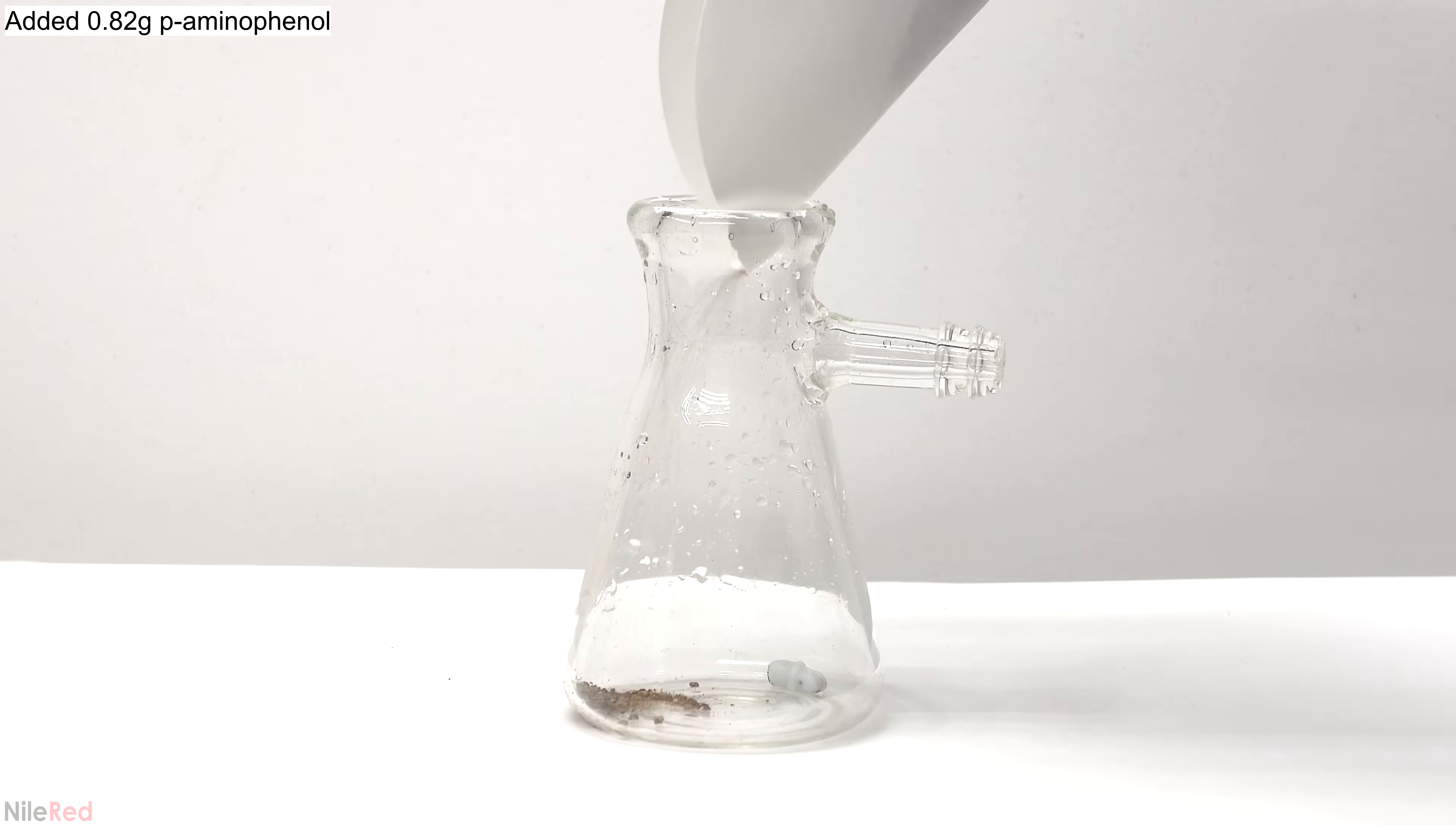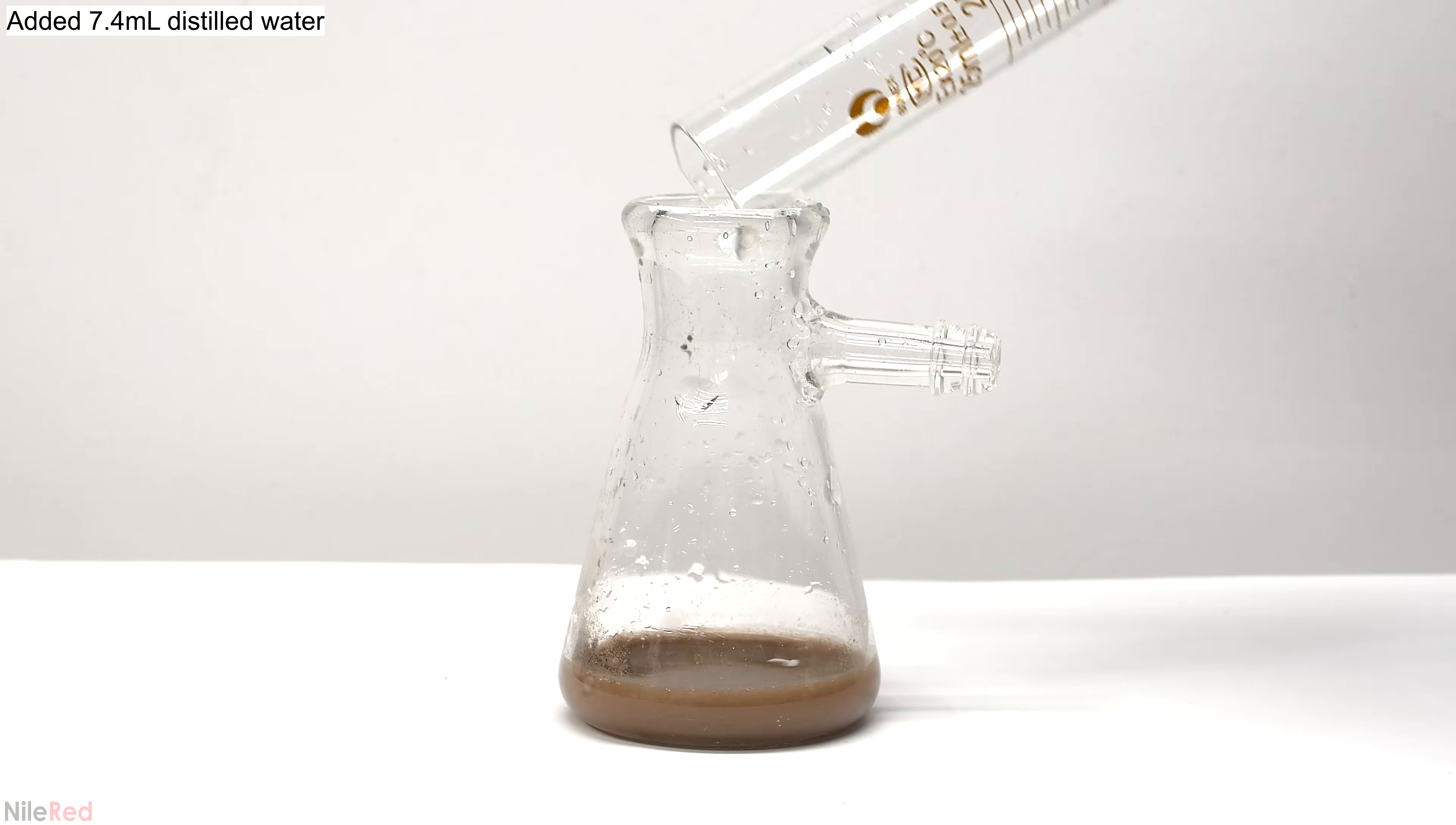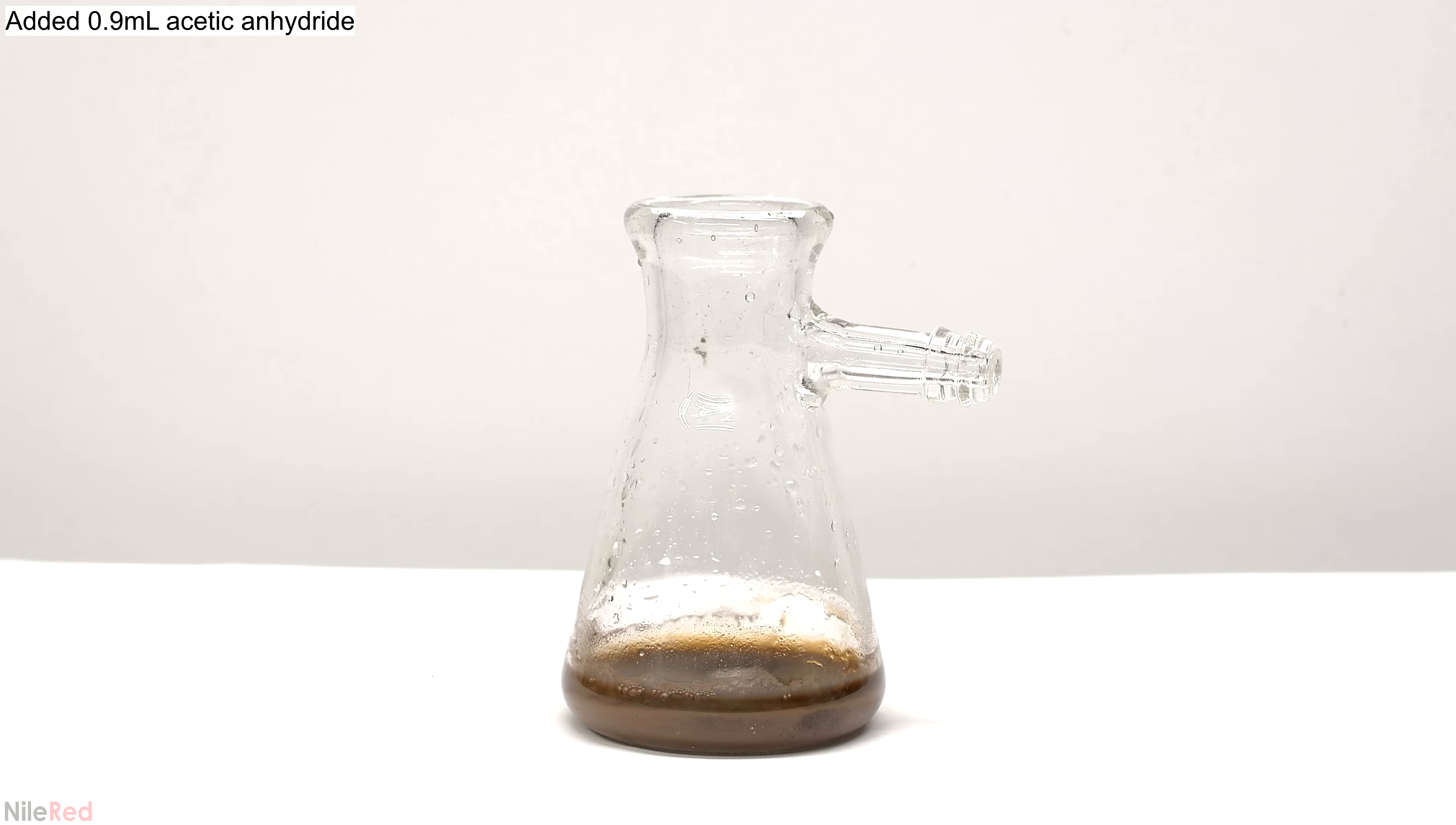To start things off, all of the p-aminophenol was added to a flask along with a little bit of water. P-aminophenol is not very soluble in water, and what we want is an evenly mixed suspension. Once I had a nice even suspension, I added the acetic anhydride. After it's added, the p-aminophenol should quickly dissolve.